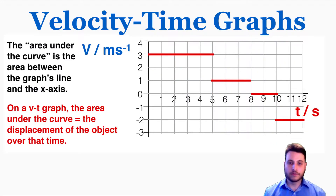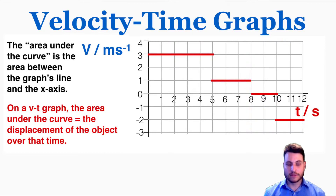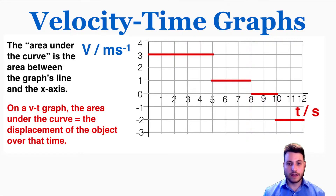This next part can confuse students when they first see it, but after some practice it becomes pretty easy. The area under the curve of a velocity-time graph is the area between the graph's line and the x-axis, and on a velocity-time graph specifically, the area under the curve equals the displacement of the object over that time.